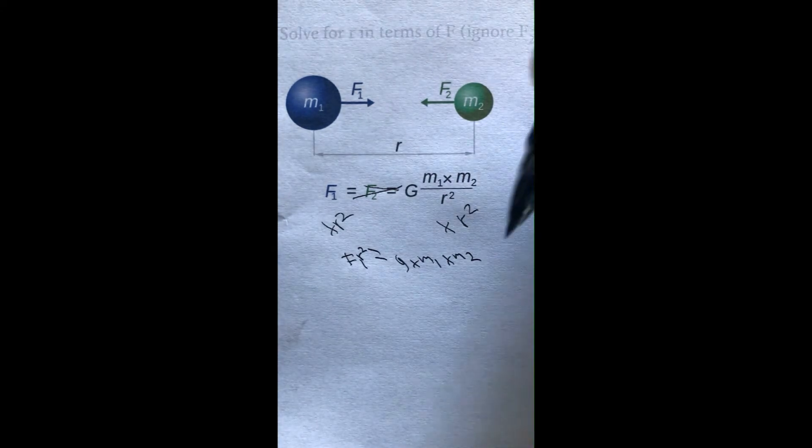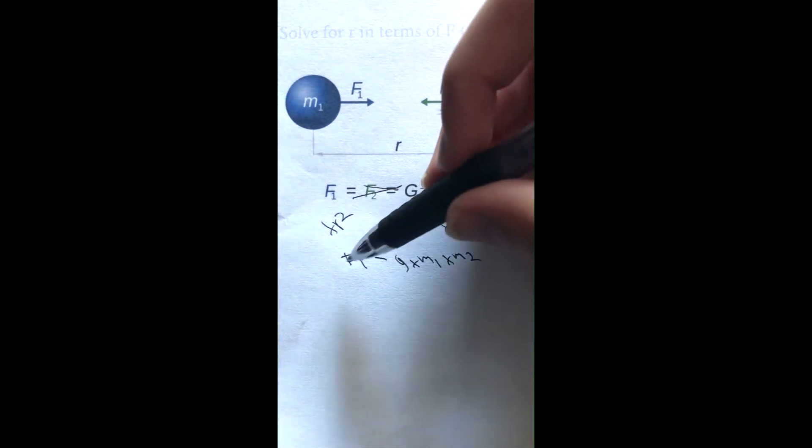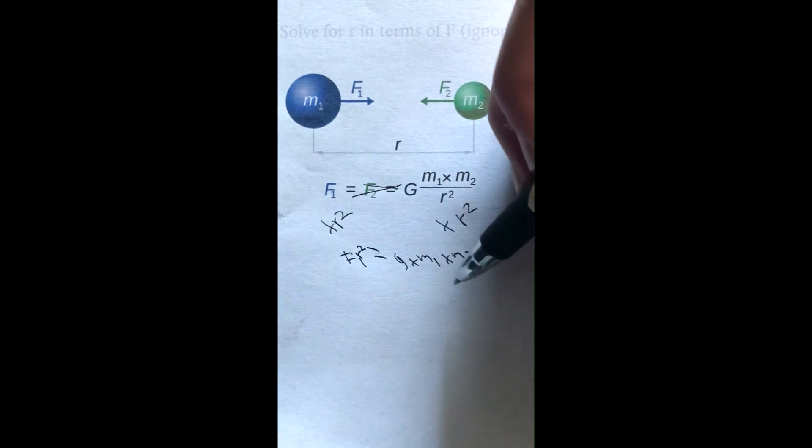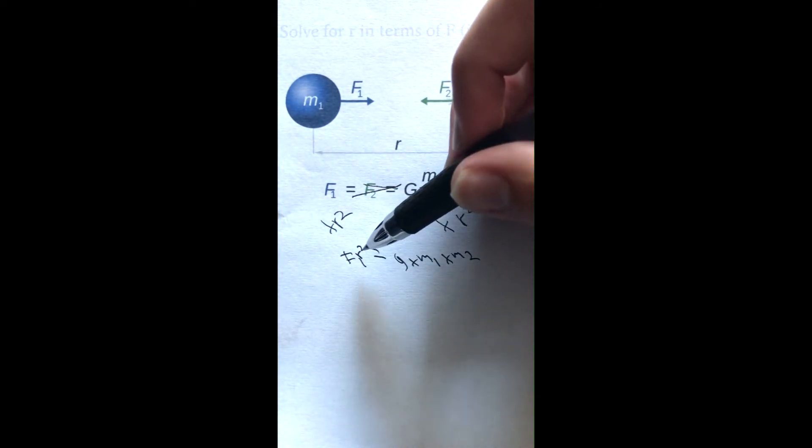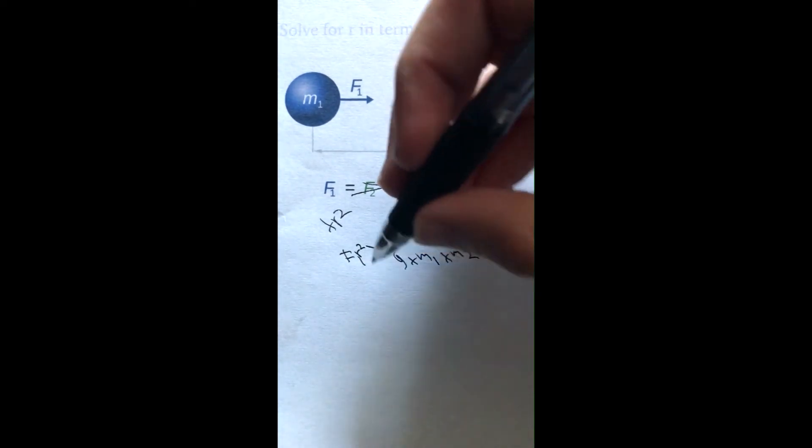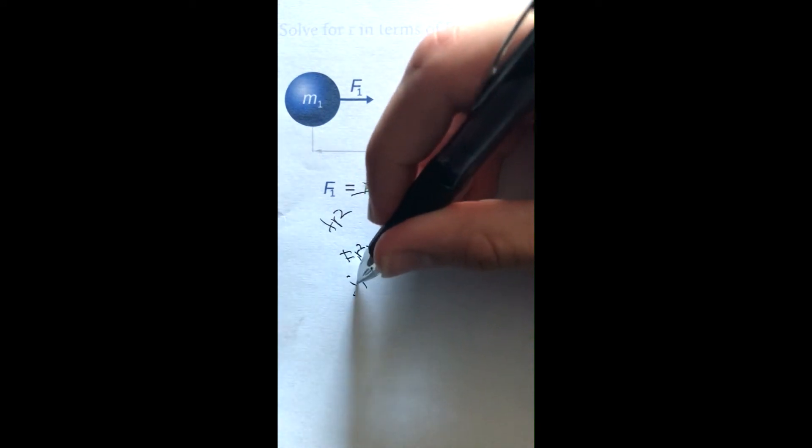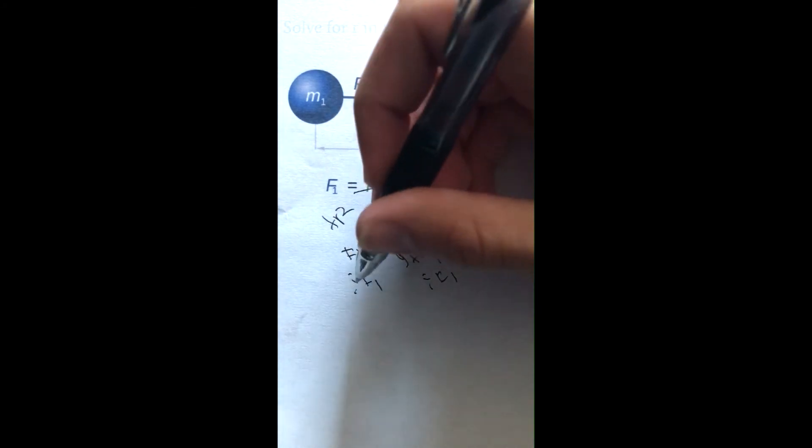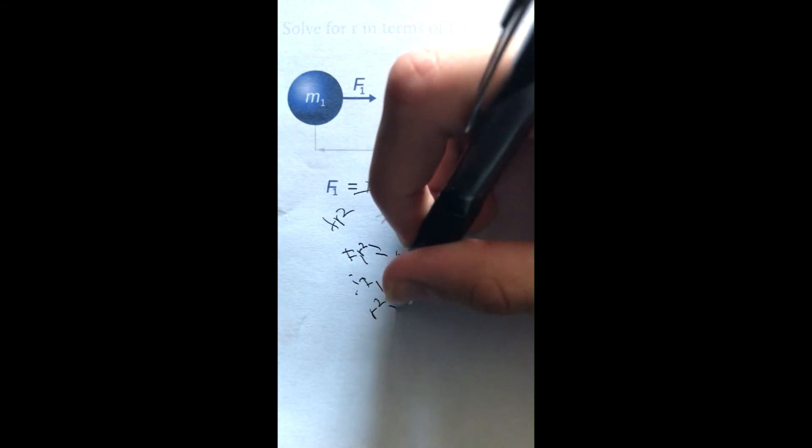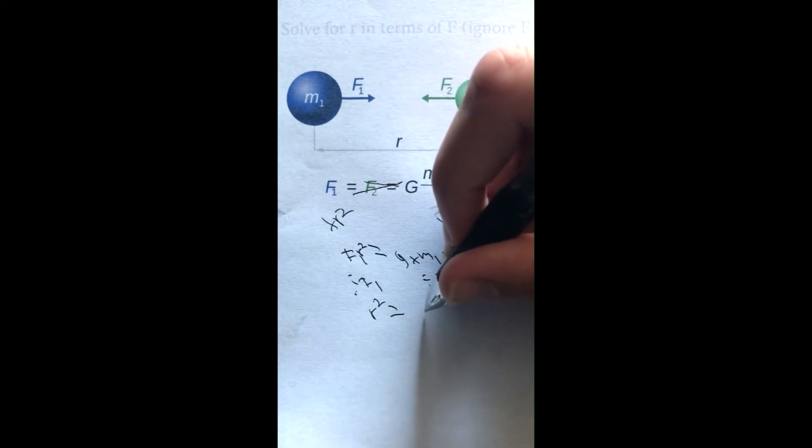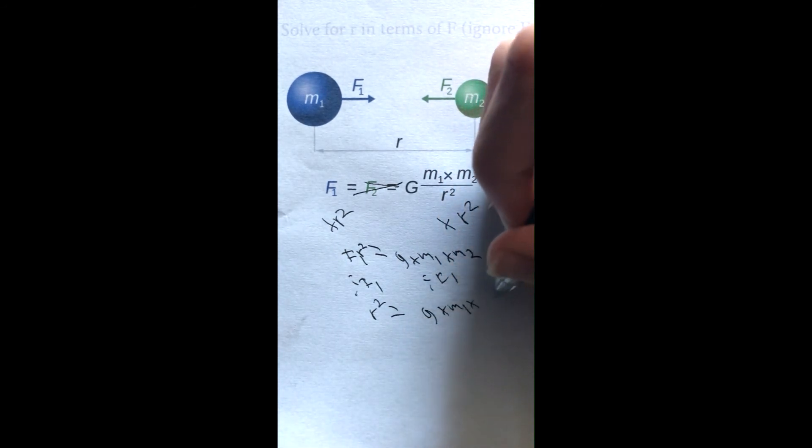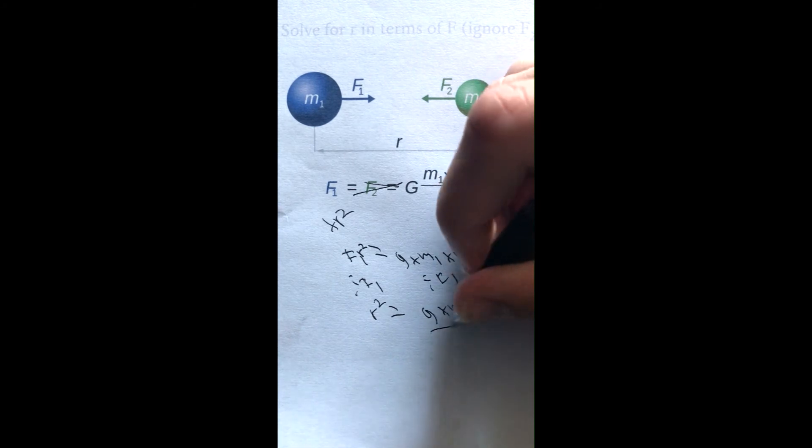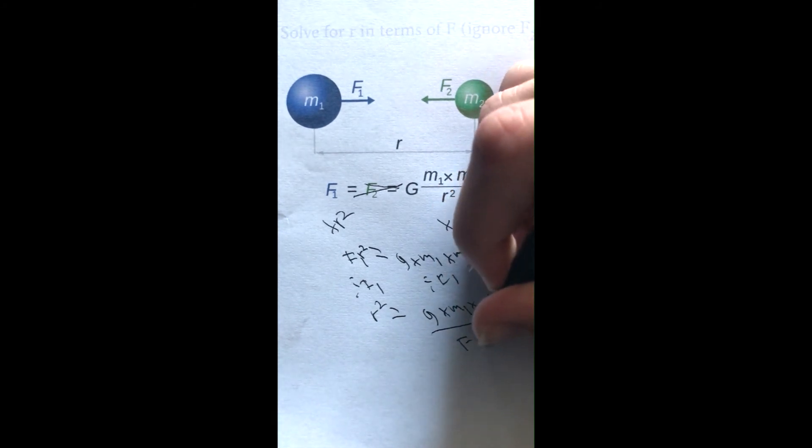Then you want to bring F₁ to the other side because you want r to be alone. You divide by F₁ and get r² equals G times m₁ times m₂ over F₁.